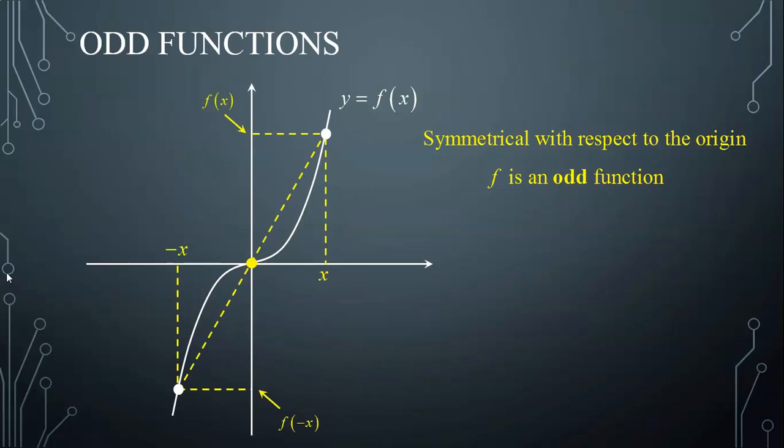Consequently, a function is odd if and only if f(-x) equals negative f(x), which means that f(-x) and f(x) are opposites.